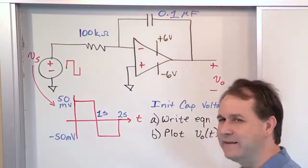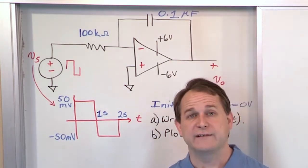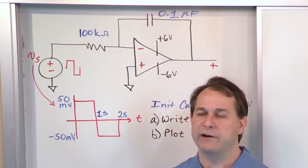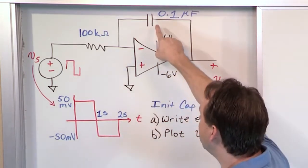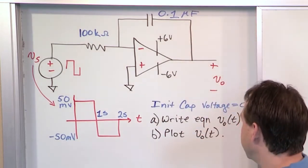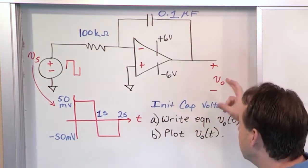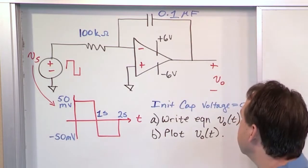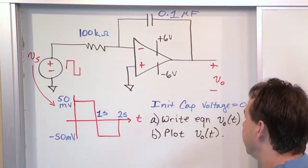The feedback mechanism is a 0.1 microfarad capacitor. These integrating amplifier circuits look just like inverting amplifier configuration, other than instead of a resistor here, we put a capacitor. We've already derived what the output relation looks like. The power supply is plus minus 6 volts.